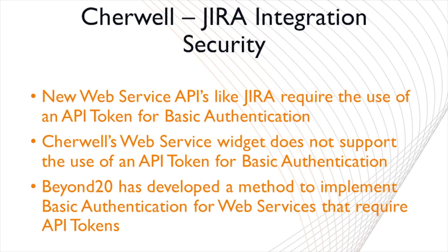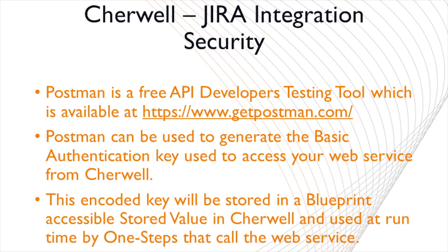So just to review: in order to use a web service that requires basic authentication with an API token, you cannot use basic authentication in the web service call itself. You will have to create an API bearer token using Postman or some other form of API token encoding tool, then copy and paste that bearer token into a stored value that you have created in your blueprints folder. That stored value can then be added at runtime to the authorization header parameter that you will need to create for each of your methods that you use for that web service.